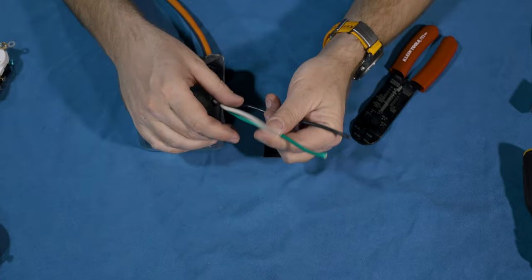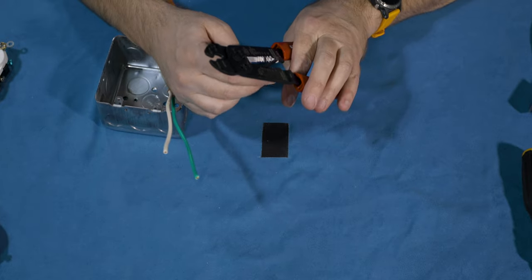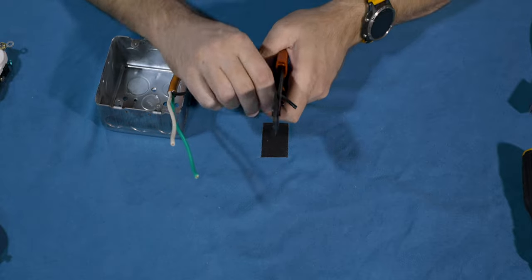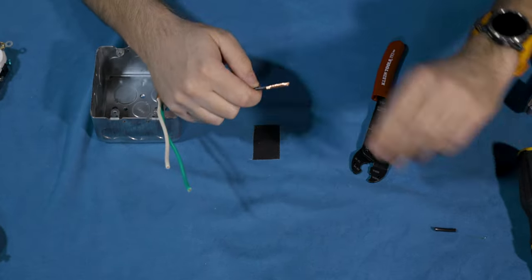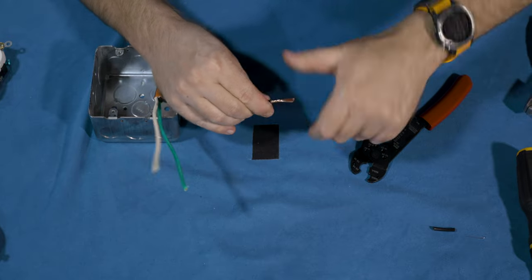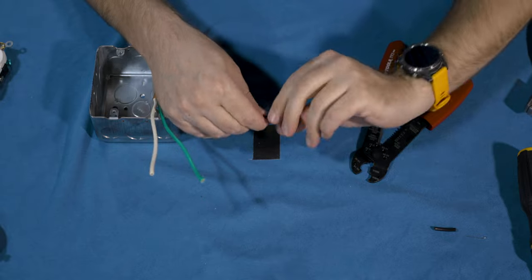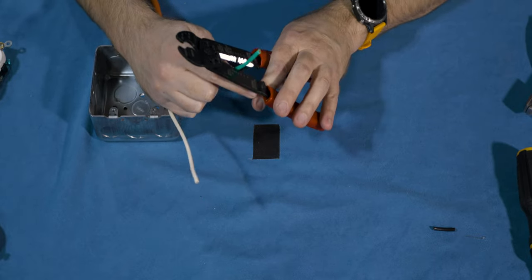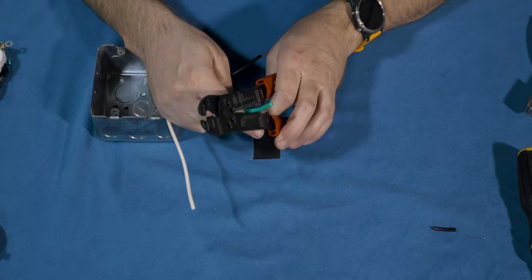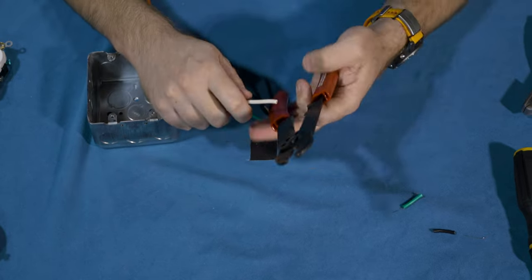And we need to peel our wires here. So you take your wire strippers and go down about an inch or so. Spin it around. Pull that guy off. And then make sure you twist these wires nice and tight. And again this one, right here about an inch. Last one.